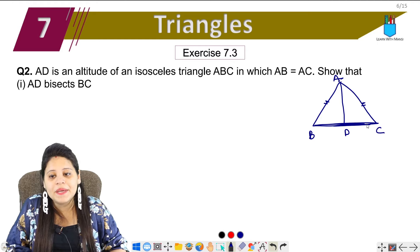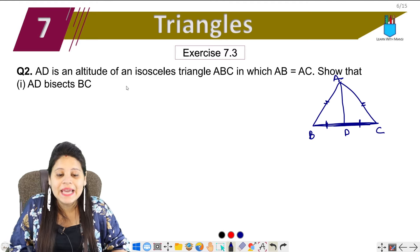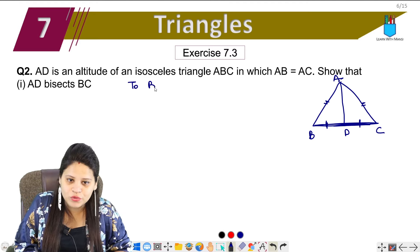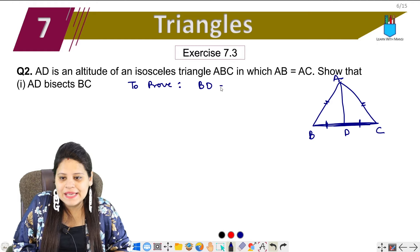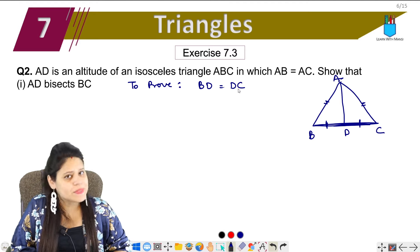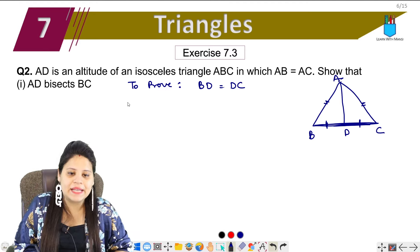That means what do I have to do here? We have to prove that BD is equal to DC. Simple congruency rules. We have to prove it and then show them. So let's start.